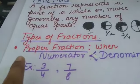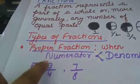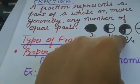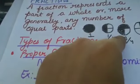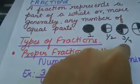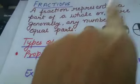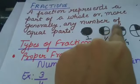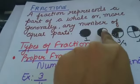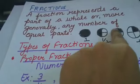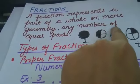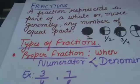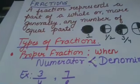The numerator is how many parts you have, and the denominator is how many parts the whole was divided into. The whole was divided into 4 parts in this one, and you have 3 parts, so this is 3 by 4. Now let us come to the types of fractions.